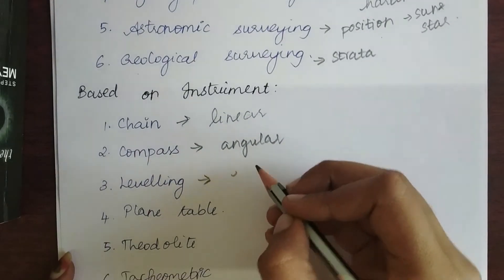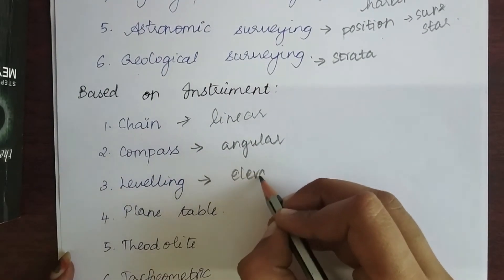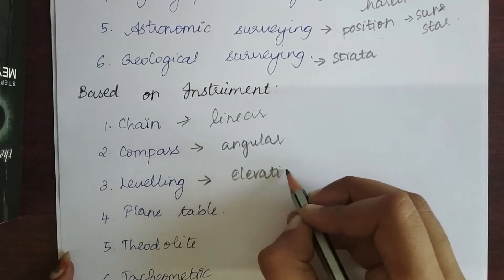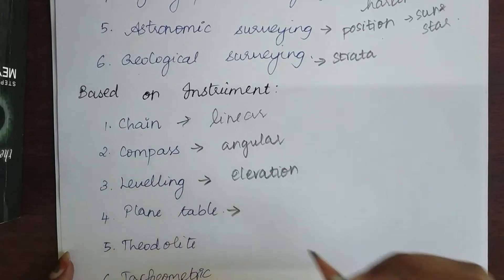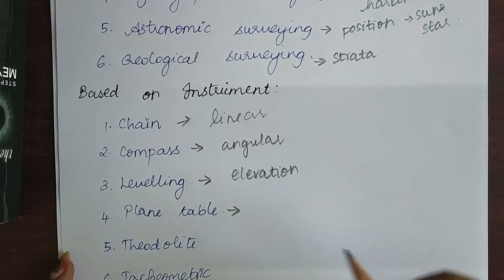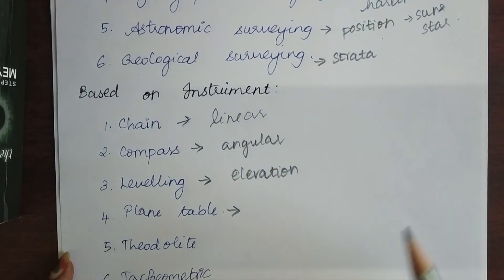Leveling is used to find the elevation of an object. Next is plane table surveying. This is a special type of surveying using graphs, scales, and many other things. We will look into plane table surveying in detail in the upcoming chapters.